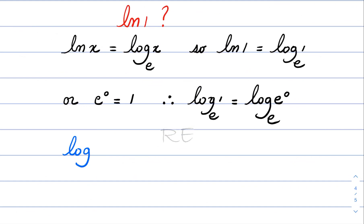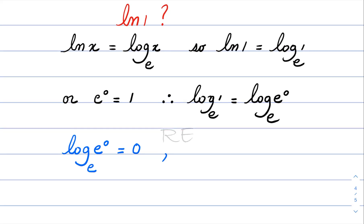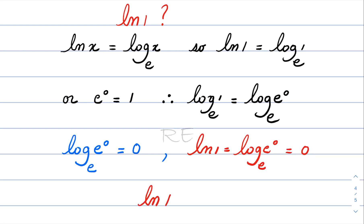To what power should I raise e to get e to the 0? Well, that power obviously is 0. So ln(1) is equal to log base e of e to the 0, which is 0. In conclusion, ln(1) is equal to 0.